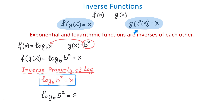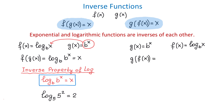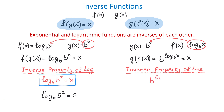Now let's find the composition of g of f of x, where g of x is equal to b to the x power and f of x is equal to log base b of x. In this composition, f of x is the input for the g function, so in the g function we replace x with log base b of x, giving b to the power of log base b of x. According to the definition of inverse functions, this composition must also equal x. This is the second inverse property of logarithms: b to the power of log base b of x equals x.